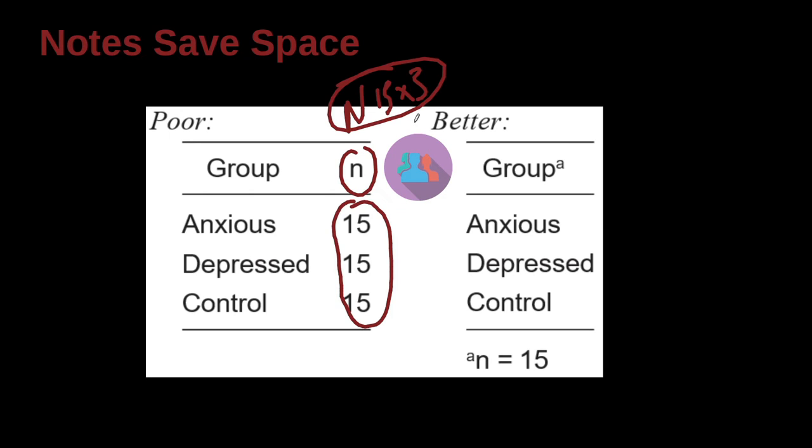So we've broken them into three subgroups. So we use n, but they're the same. So why not make the table smaller? How? Just say group. What is a group? Make a note. In this case, a is n equals 15, 15 people in subgroup.